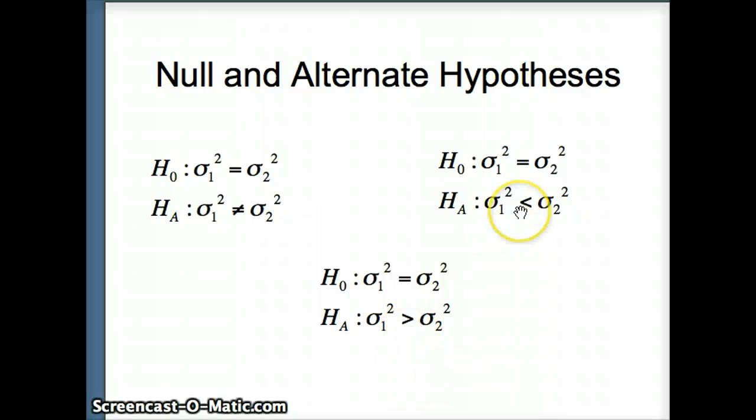And as we've seen earlier, we could certainly subtract variance 2 from both sides. So our H naught could be variance 1 minus variance 2 equals 0 to give us an idea about how this could be used.